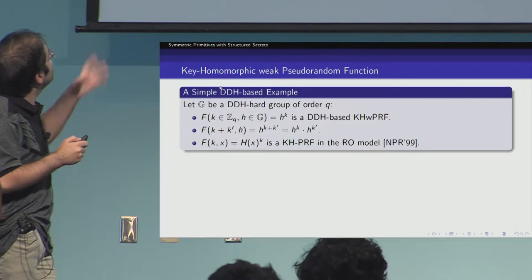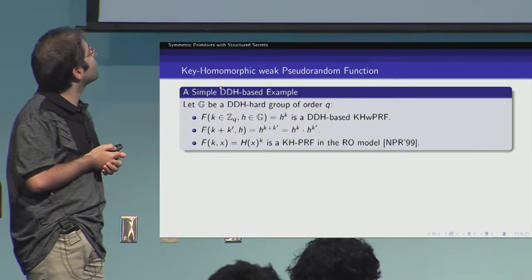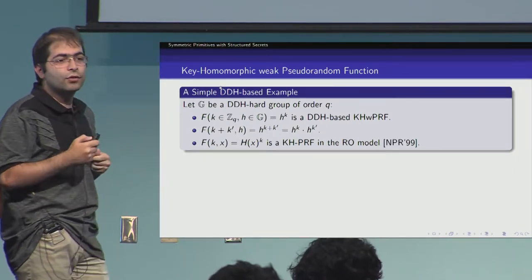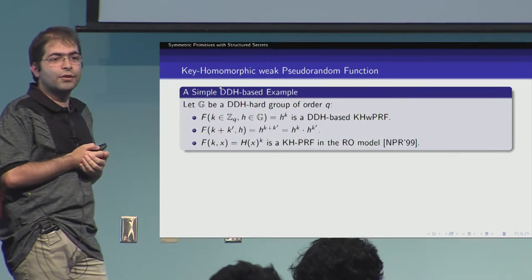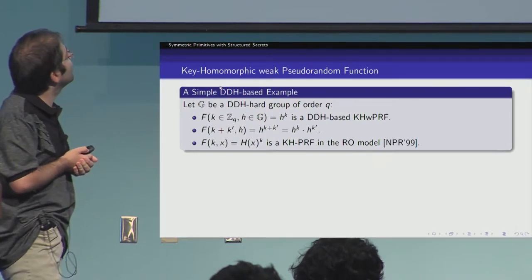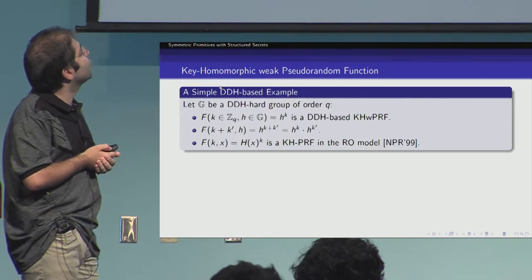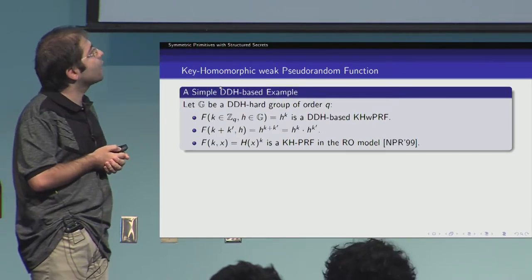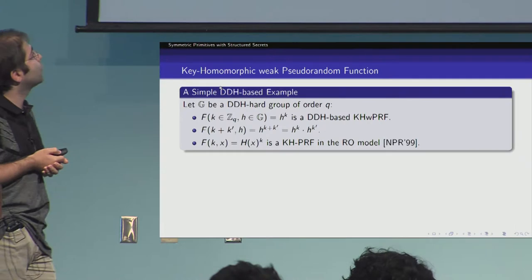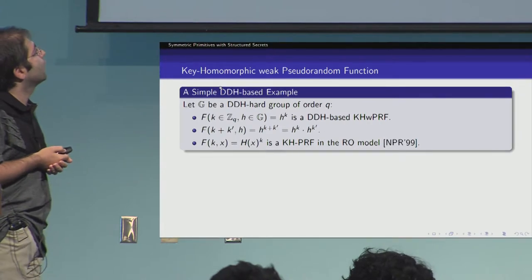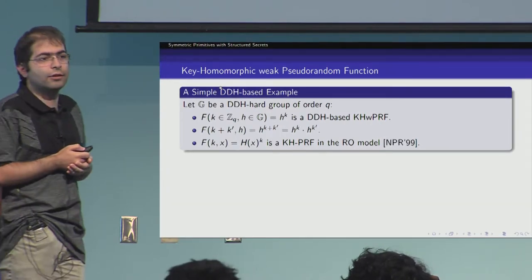Additionally, if we define the function F as F(K, X) = H(X)^K, where H is a random oracle from bit strings to the DDH-hard group, it has been shown that this is a keyhomomorphic weak PRF in the random oracle model, as shown by Naur, Pincus, and Reingold in 1999.